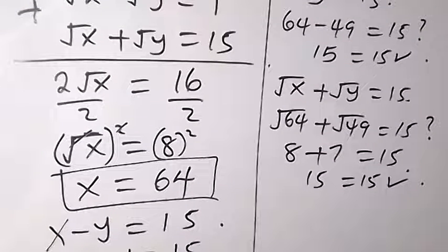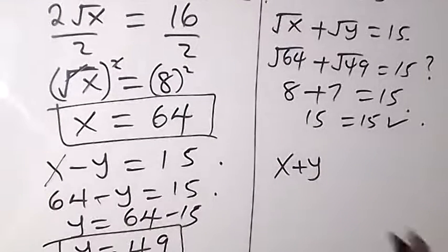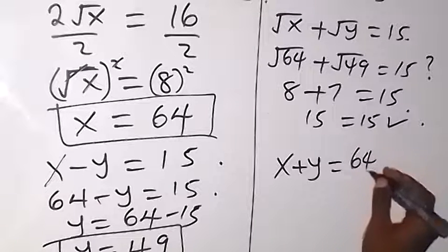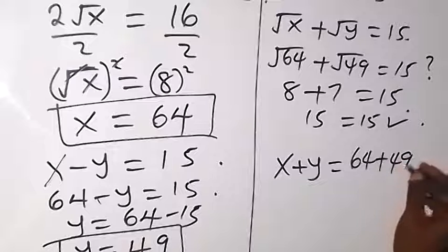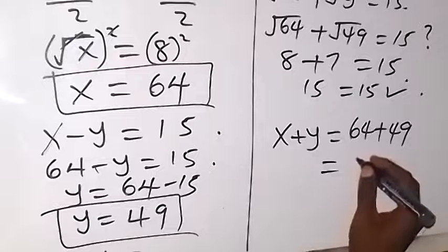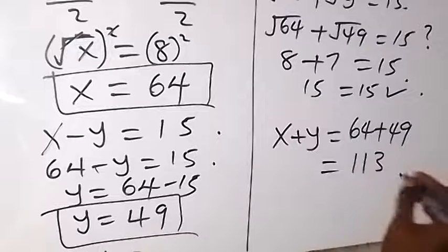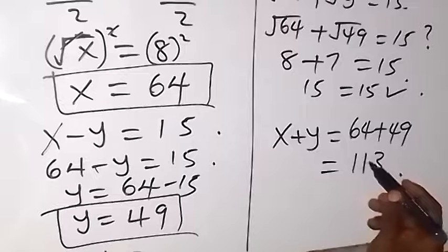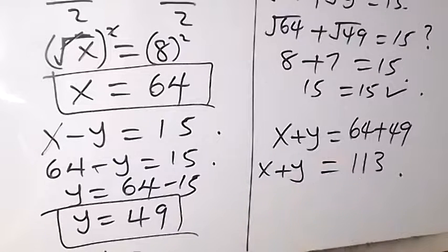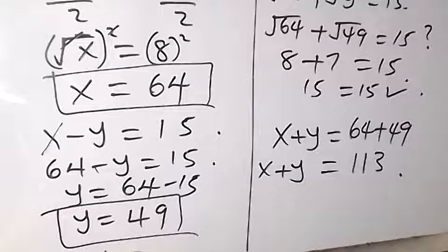We can conclude that the value of x plus y is 64 plus 49, which equals 113. So the value of x plus y is 113. Thank you for watching, and don't forget to subscribe to this channel for more videos. See you in the next class, bye for now.